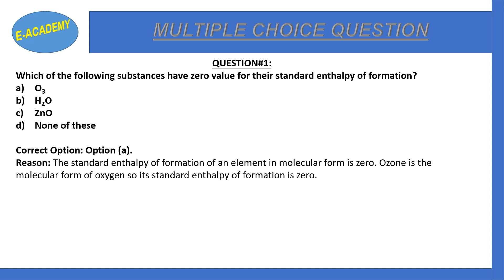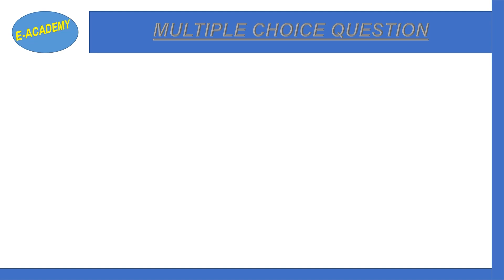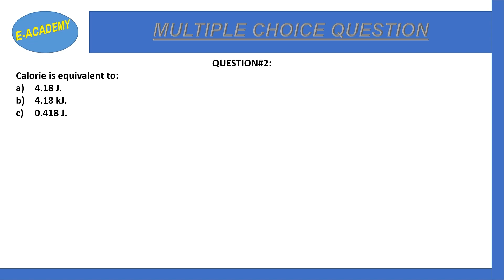Question number two: One calorie is equivalent to — options are 4.18 joule, 4.18 kilojoule, 0.418 joule, or 0.418 kilojoule.